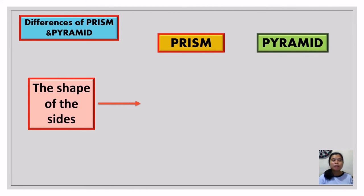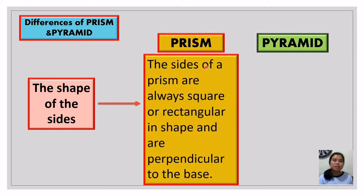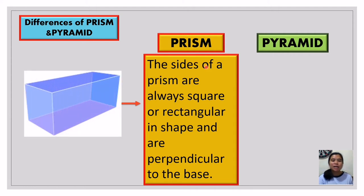Next, let's look at the shape of the sides. Starting with the prism: the sides of a prism are always square or rectangular in shape and are perpendicular to the base. As you can see in this example, this side is square, and its opposite side is also square. And this side is rectangular in shape, and its opposite side is also rectangular. So the sides of a prism are either square or rectangle.